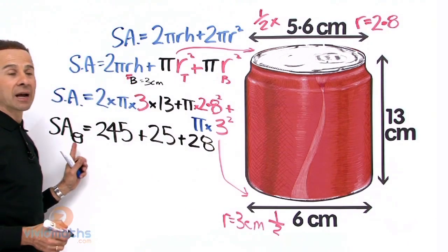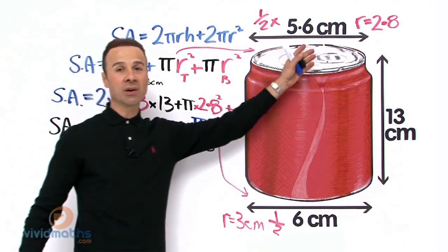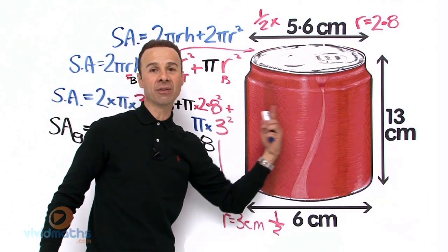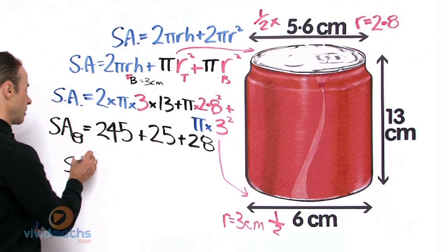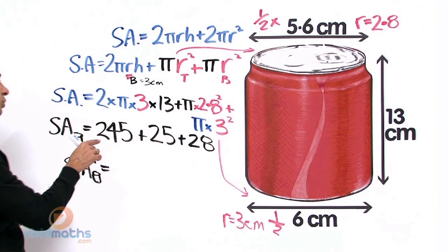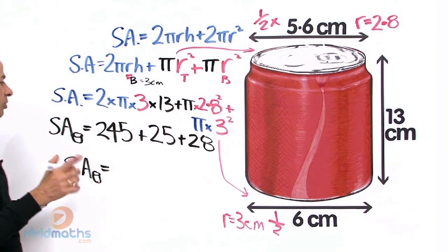All we need to do now is add up all those values and we will come up with the complete entire surface area: top, bottom, and curved area for this can of cola. That is going to give us 245 plus 25 plus 28 all together.